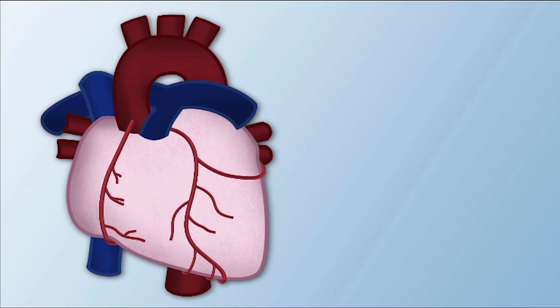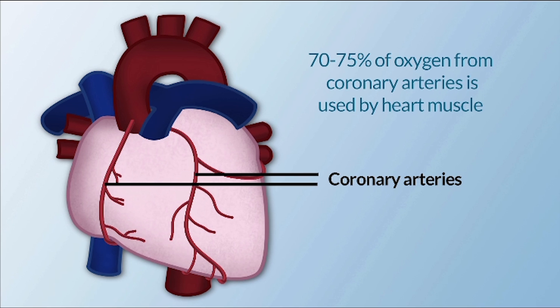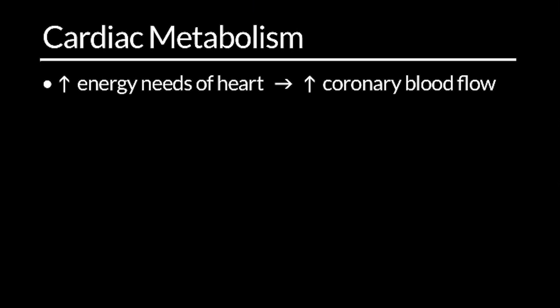The oxygen supply of the heart is delivered by the coronary arteries. 70–75% of the oxygen from the coronary arteries is used immediately by the heart muscle, leaving little oxygen reserve. Increased energy needs of the heart can only be met by increasing coronary blood flow.